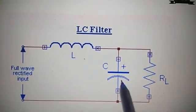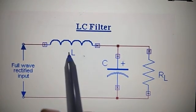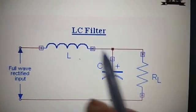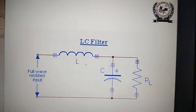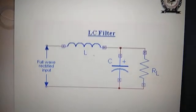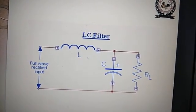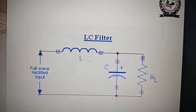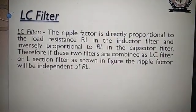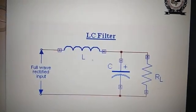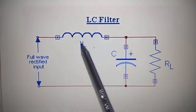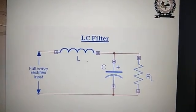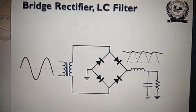The capacitor is always connected in parallel with the load, while the inductor is connected in series with the load. This filter is called the LC filter. The ripple factor is directly proportional to the inductance and inversely proportional to the capacitor, and hence this combination will improve the filter.